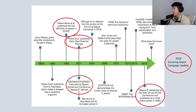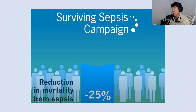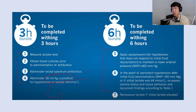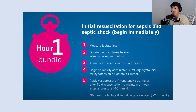The Surviving Sepsis Campaign started around 2001, with the most recent update in 2018, and its goal is to reduce mortality from sepsis by 25%. They originally introduced a three-hour bundle and a six-hour bundle involving steps like measuring lactate, getting blood cultures, giving antibiotics, and giving 30 mL/kg of crystalloid — an important number to remember. In 2018, this was simplified to a one-hour bundle: measure lactate, get blood cultures, give broad-spectrum antibiotics, give crystalloid for hypotension, and apply vasopressors — all within the first hour.